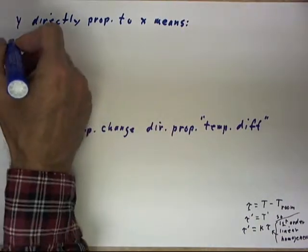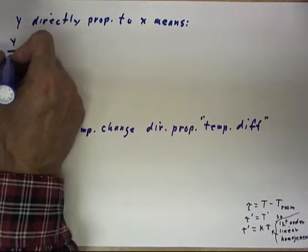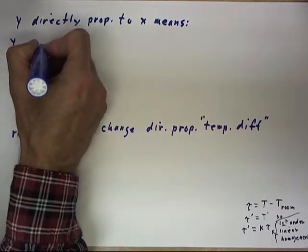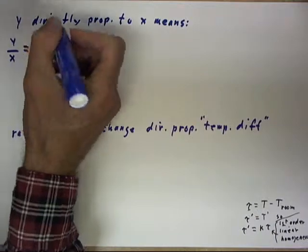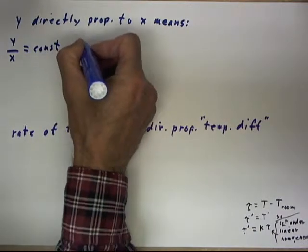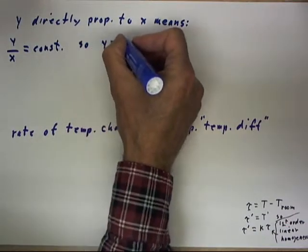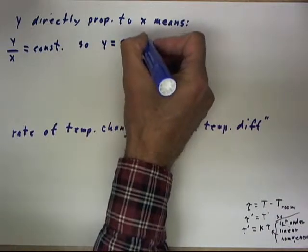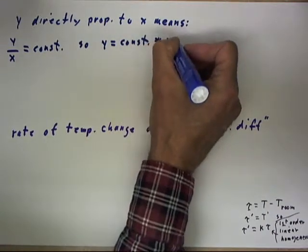That means among other things that y over x equals constant, so y is some constant multiple of x.